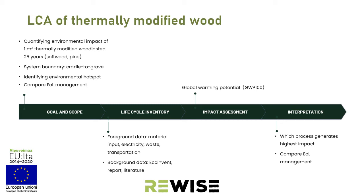In the life cycle inventory, we collect data — first foreground data, which is primary data including material input, electricity, waste, and transportation. We complement this with background data from ecoinvent, and we also use reports and literature. For impact assessment, in this case we focus on only one impact category: climate change impact, or global warming potential.